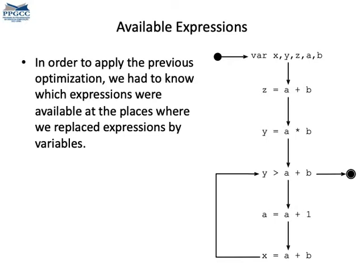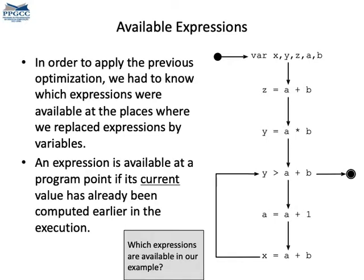To apply the optimization, we need something called Available Expressions. These are the expressions, I mean the computations like A plus B, that were available at particular program points. They have been calculated before. In other words, an expression is available at the program point if its current value has already been computed earlier during the execution of that program.